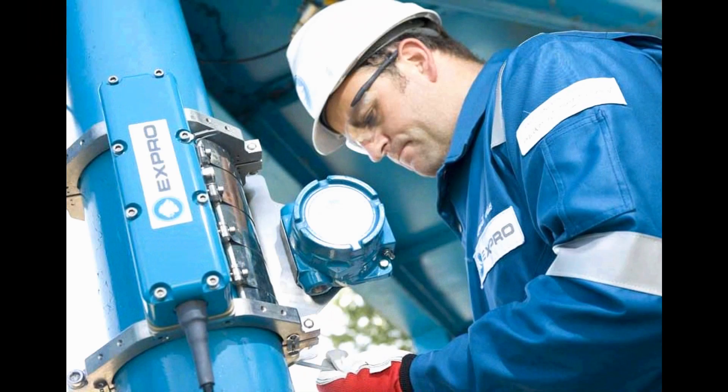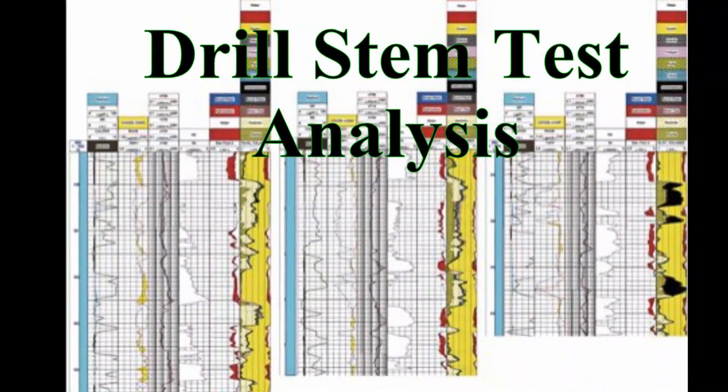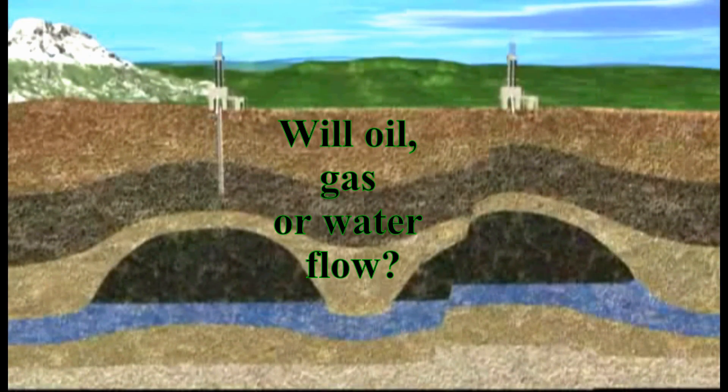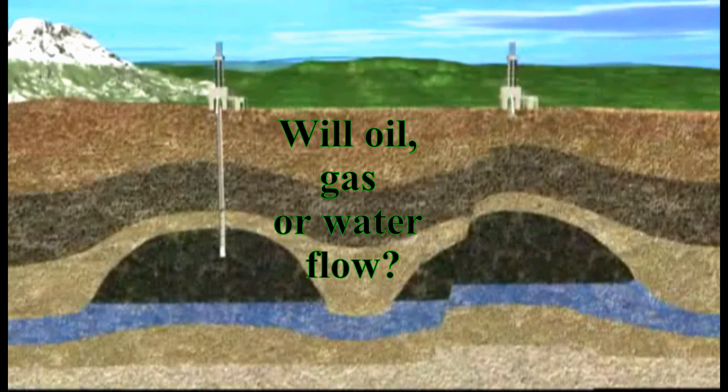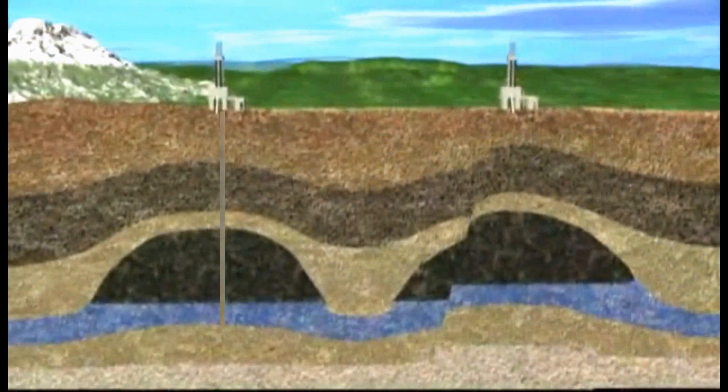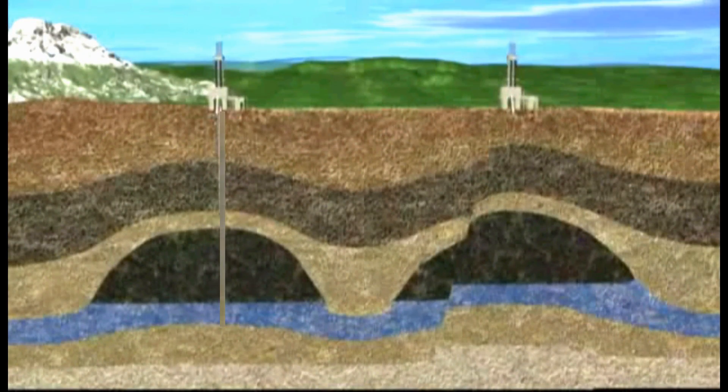Samples are collected and sent to the lab for further analysis. This part of the test establishes whether oil, gas, or water will flow to or near the surface and in what percentage. Of course, the worst case scenario is when the producing fluid is only salt water.